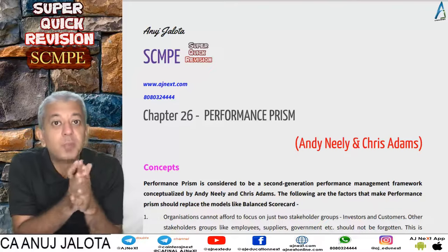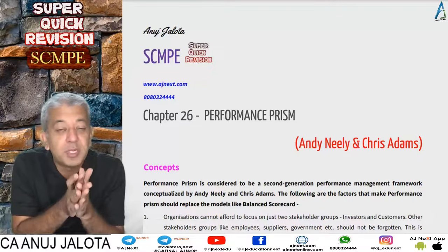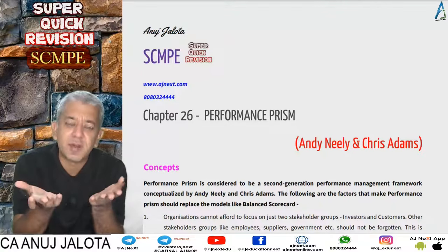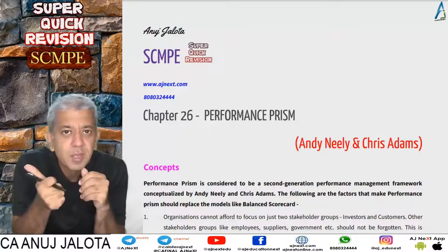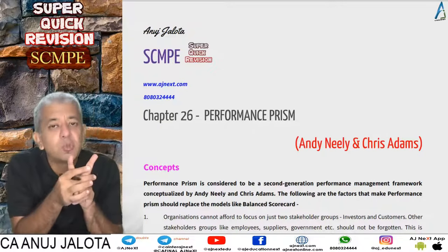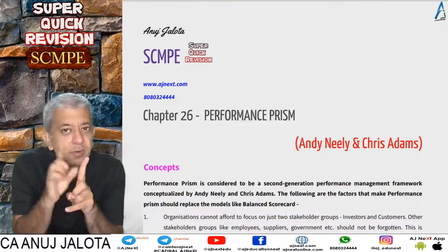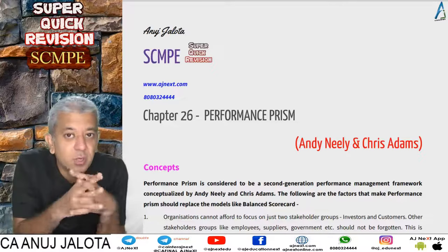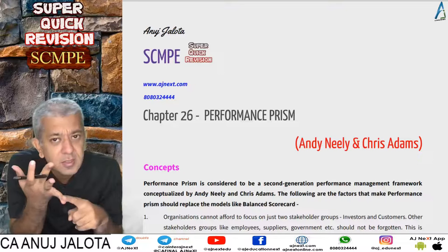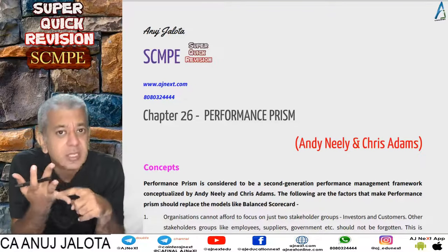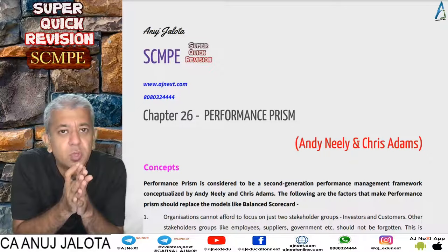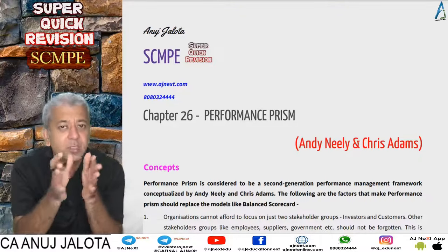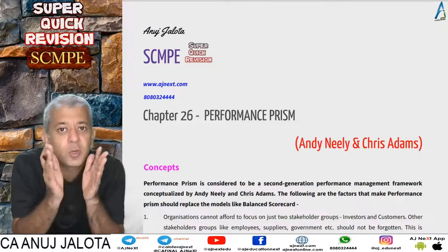Welcome back to our super quick revision series. We are on to Performance Prism now. Performance Prism is basically a next step to the Balanced Scorecard. A few disadvantages of the Balanced Scorecard started to emerge. First, there is excessive focus on only two types of people: shareholders, giving rise to the financial perspective, and customers, giving rise to the customer perspective. Other types of stakeholders were being ignored.